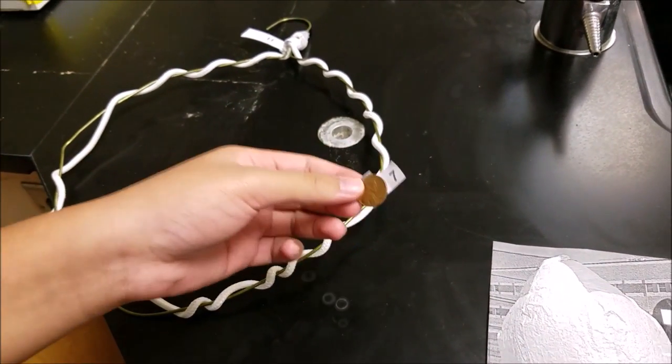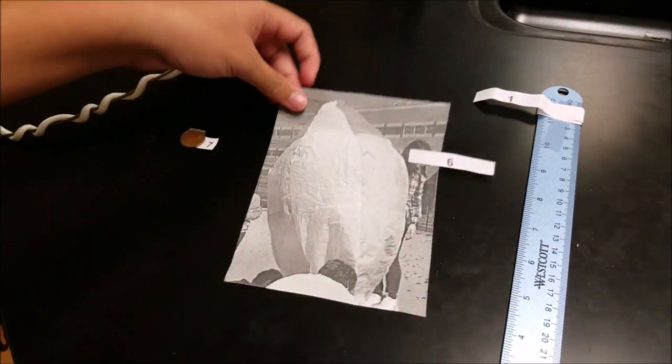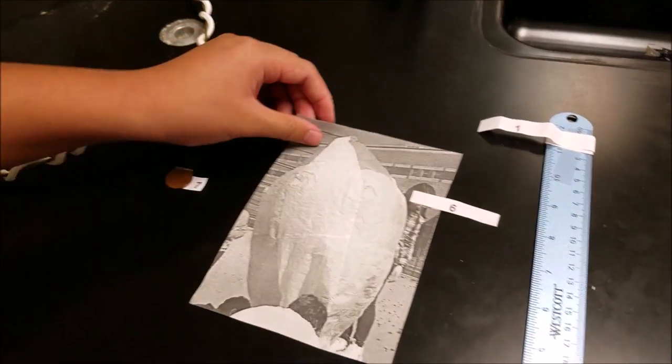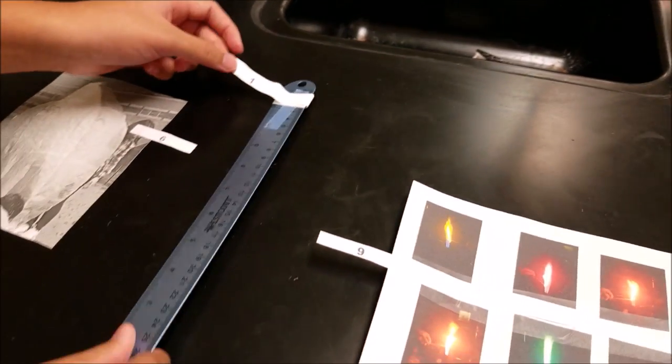This was from lab 7, when we measured the heat of a burner flame. This was a picture of a hot air balloon from lab 6, which was a hot air balloon lab. Lab 1, which was a significant figures lab when we measured stuff.